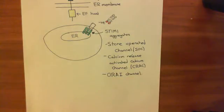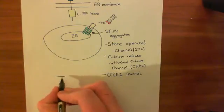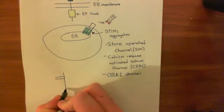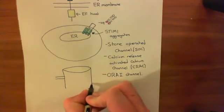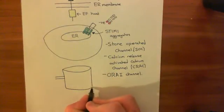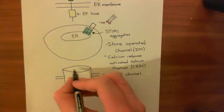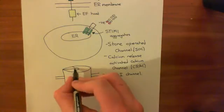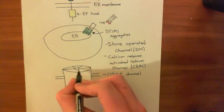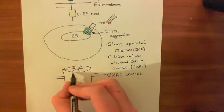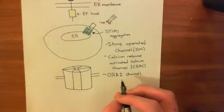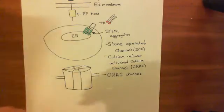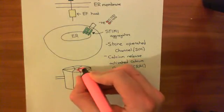Let's look at the structure of this Orai-1 channel, or store-operated channel, in more detail. It is a hexamer of proteins — made up of six proteins all put together. The proteins which make up this hexamer are the Orai-1 proteins; each of the six subunits is an Orai-1 protein.